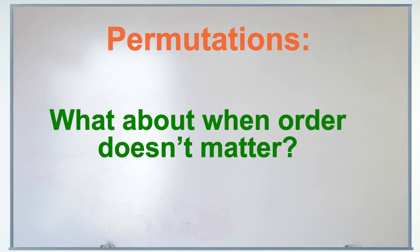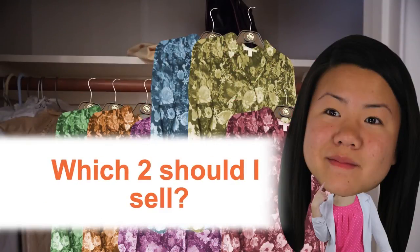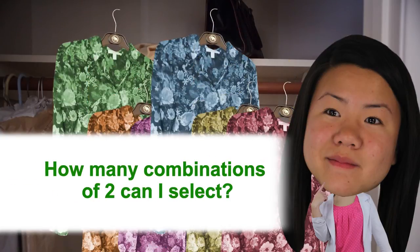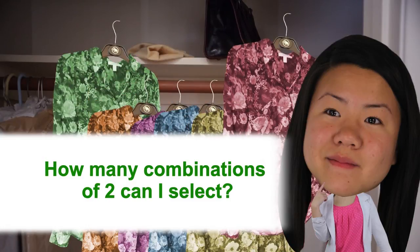But what about when order doesn't matter? Like, what if you want to sell two of those dresses on the black market, and you're deciding which two to take off the hangers? Well, here the order of the two doesn't matter. It's just a question of how many combinations of two you can select.